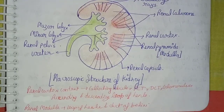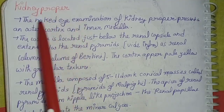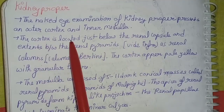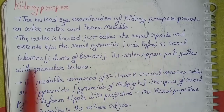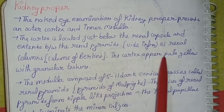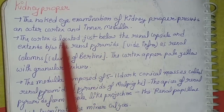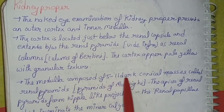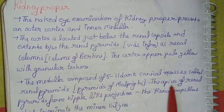The renal cortex contents include the collecting tubule, PCT, DCT, glomerulus, and ascending and descending loop of Henle. The renal medulla contents include the loop of Henle and duct of Bellini. The cortex is located just below the renal capsule and extends between the renal pyramids inward as the renal columns (columns of Bertin). The cortex appears pale yellow with a granular texture.